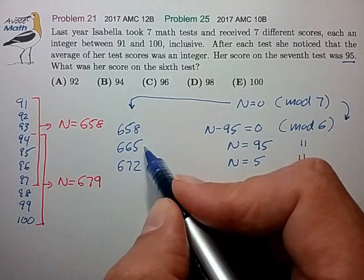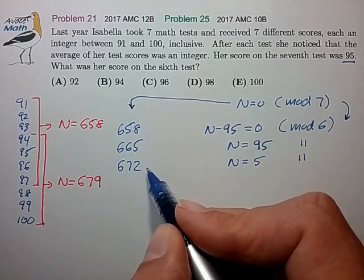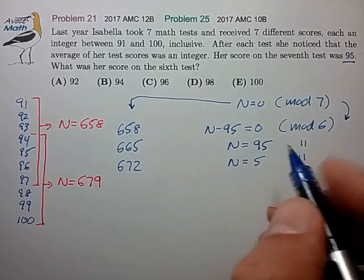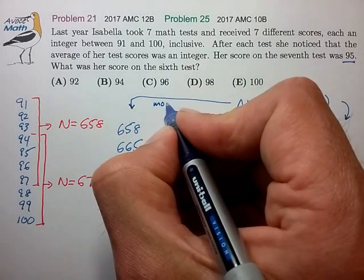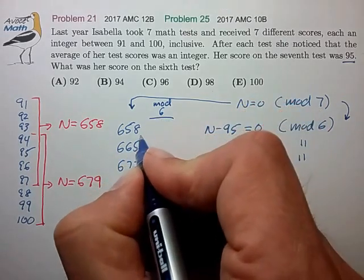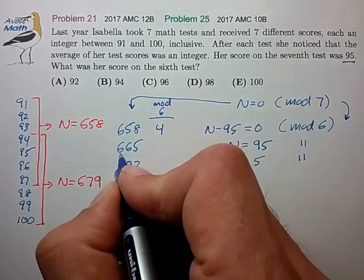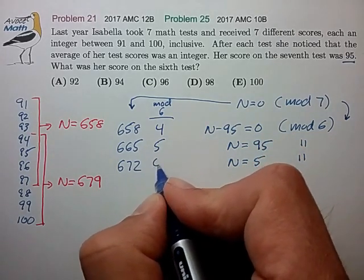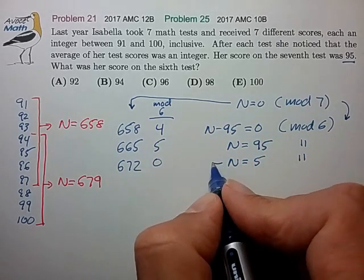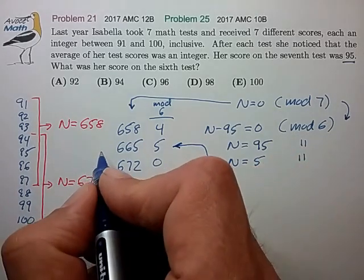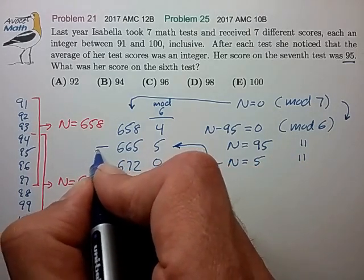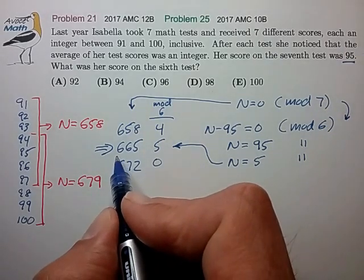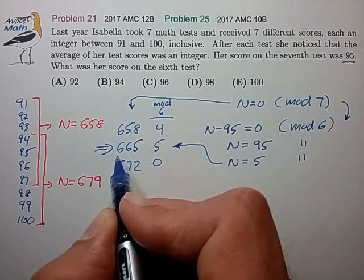So let's look at these three possible values of n and see which of them satisfy the condition that n is equal to 5 in mod six. So in mod six, we find that 658 is equal to 4, 665 is equal to 5, 672 is equal to 0. So that's a big help now because we see that there's only one value of n that satisfies both of these requirements. So we essentially know what the value of n is. It's 665.